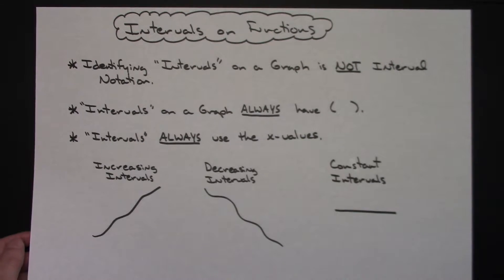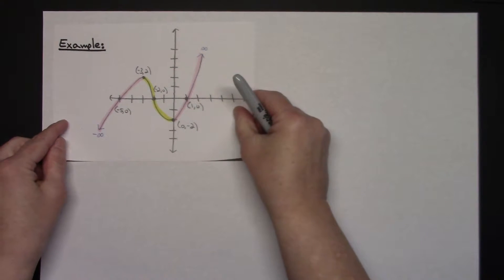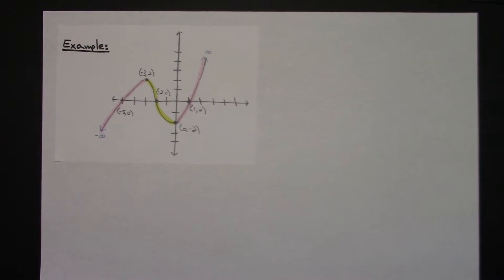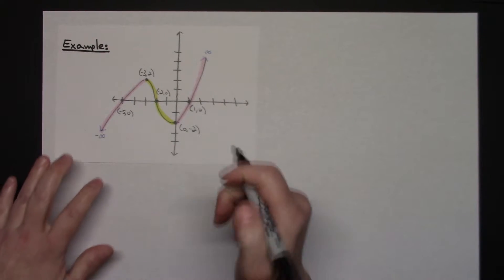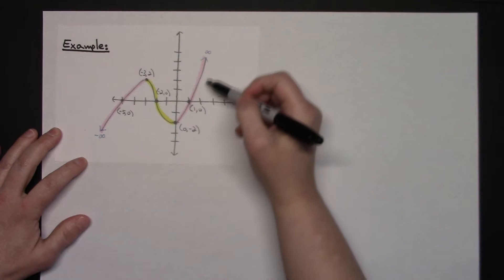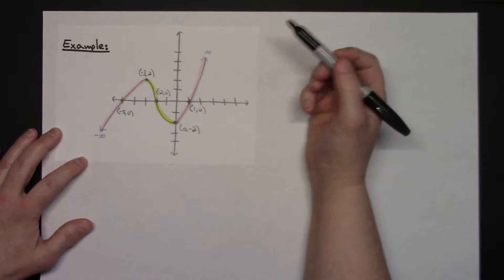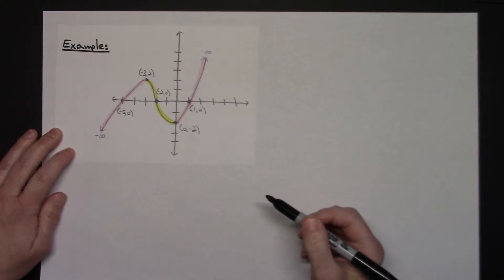So that's some background information on intervals before we start looking at an example. For our first example, I've already got a graph drawn out. We're going to find four things: all intervals (whether increasing, decreasing, or constant), domain and range, all intercepts (x and y), and the zeros. I've got a cubic-looking equation here with some very distinct points so that we can identify things.